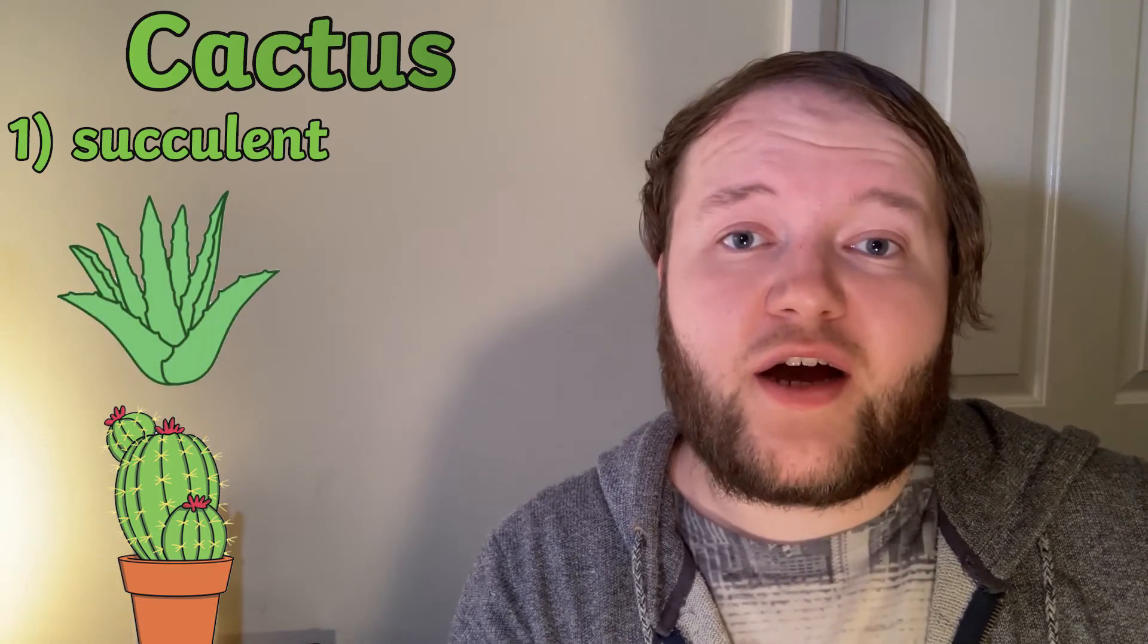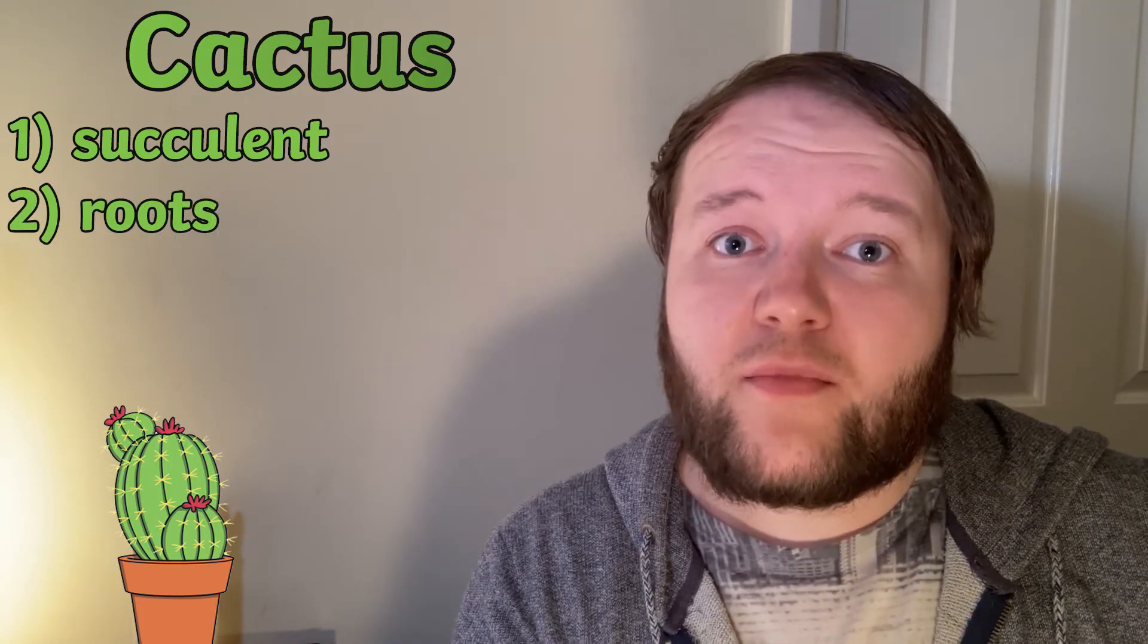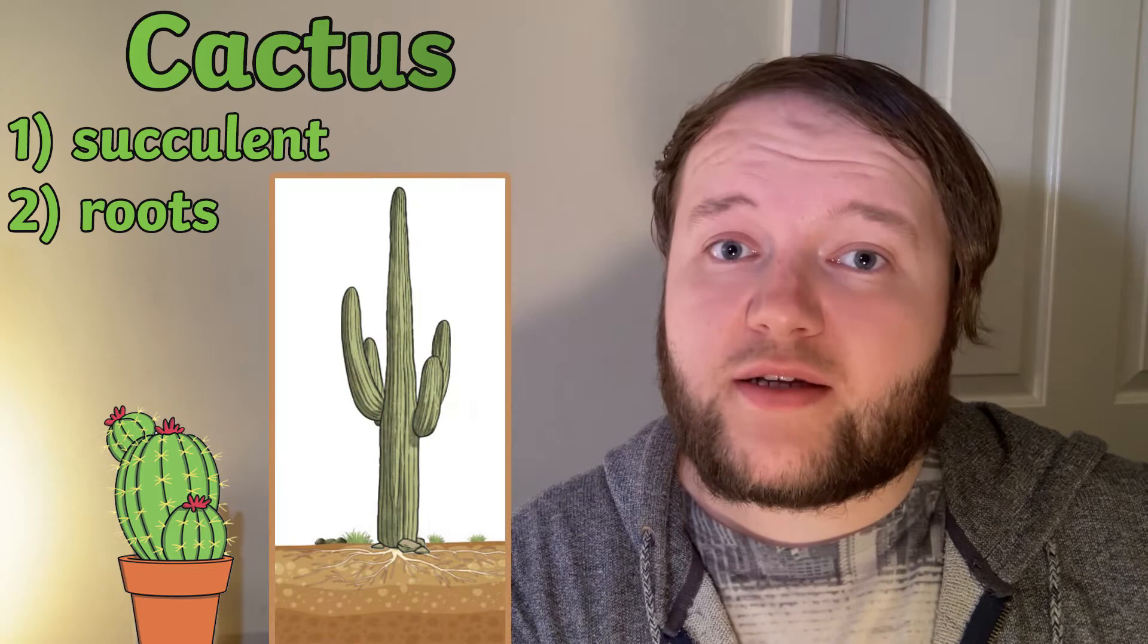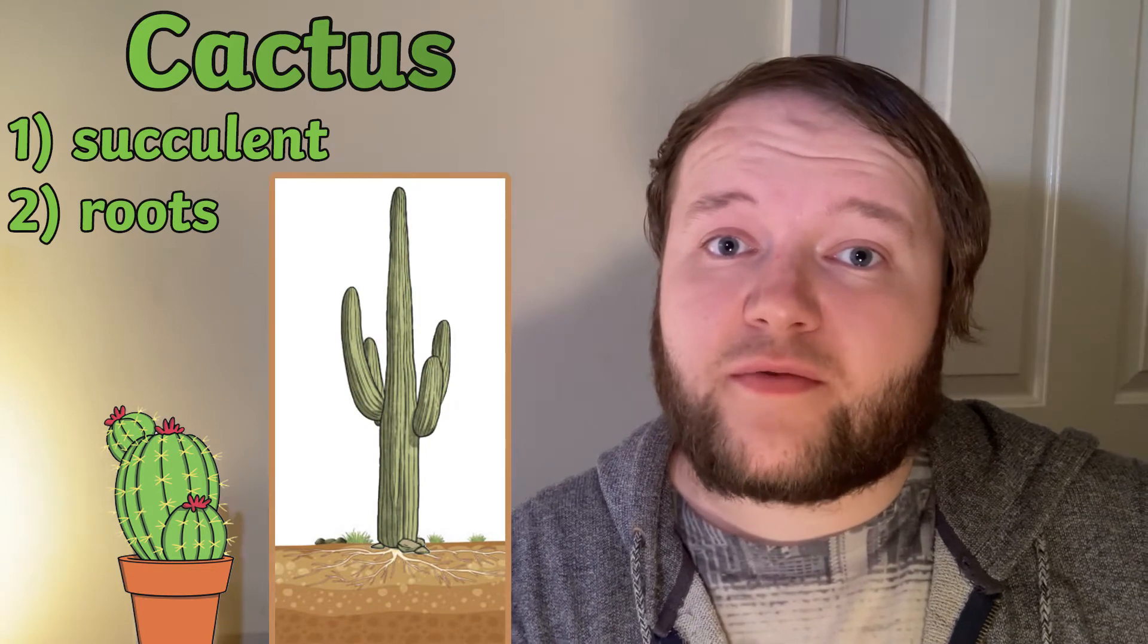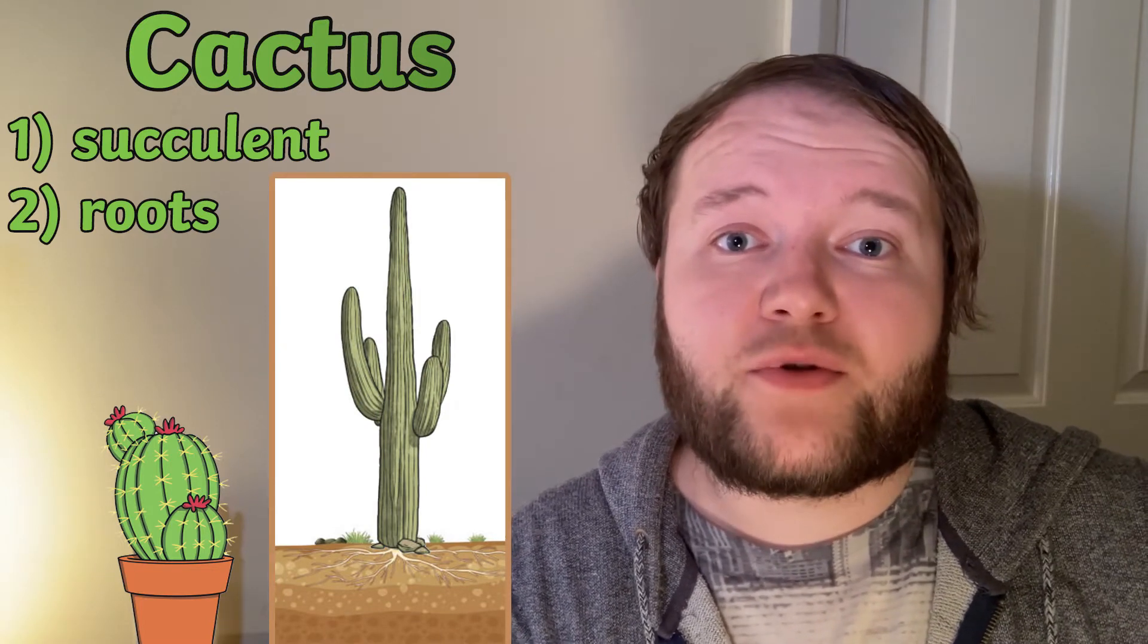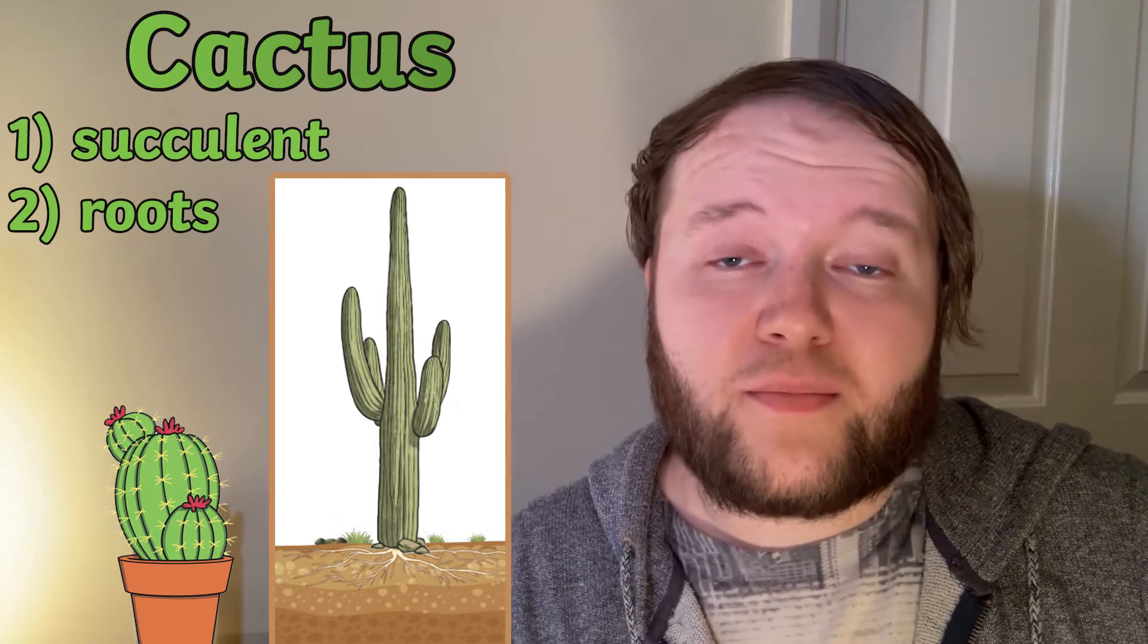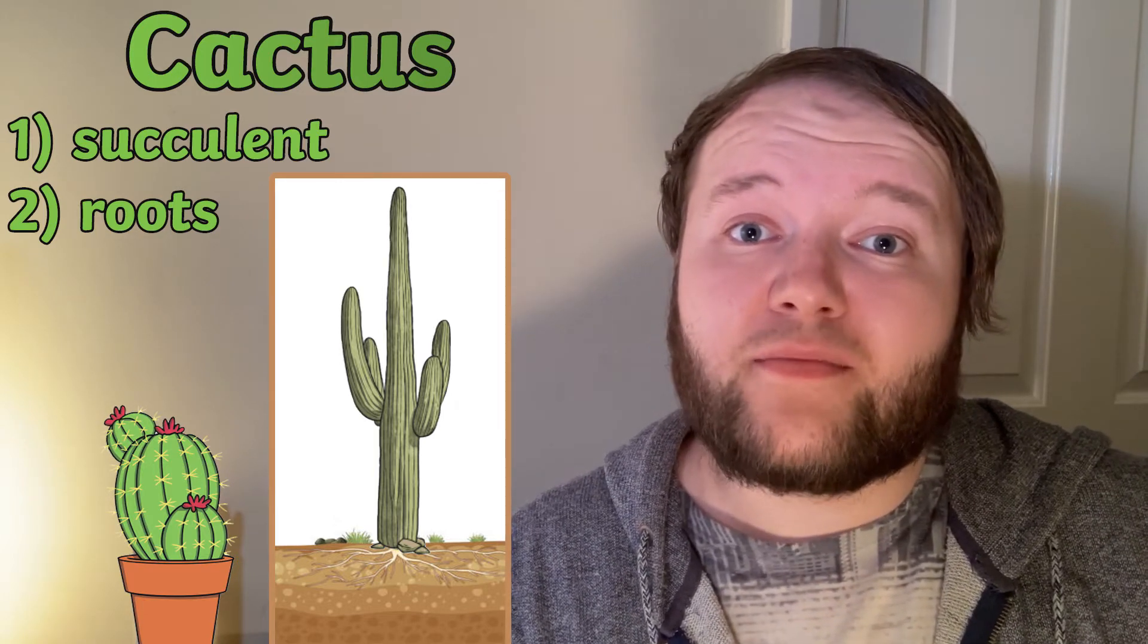The second adaptation are the roots for cactus. Most plants have roots that go deep underground, but instead the roots for cactus spread far and wide, just below the surface of the ground, allowing it to absorb as much rainfall as possible. Vital in parts of the world that don't get much rain.